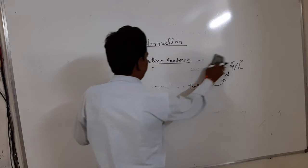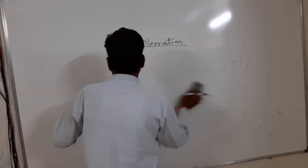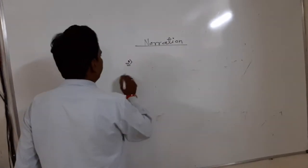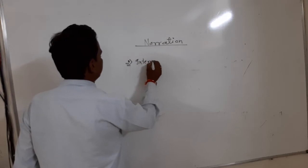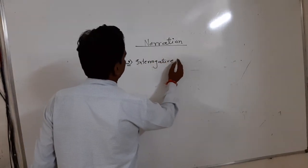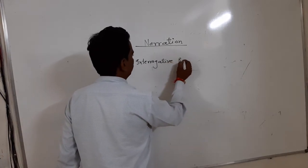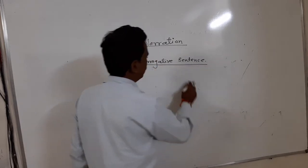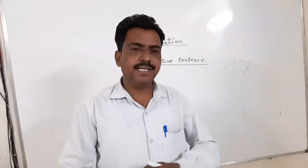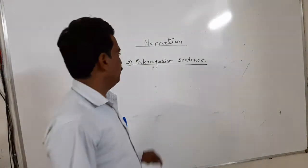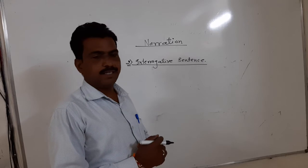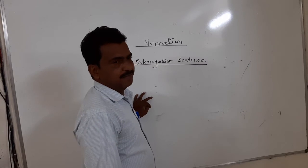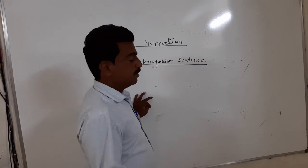Second: the interrogative sentence. We have already seen the interrogative sentence. Generally there are two types of interrogative sentences: the WH-type and the verbal interrogative. When an interrogative sentence is given in the reporting speech, which kind of conjunction and reporting word do we use?